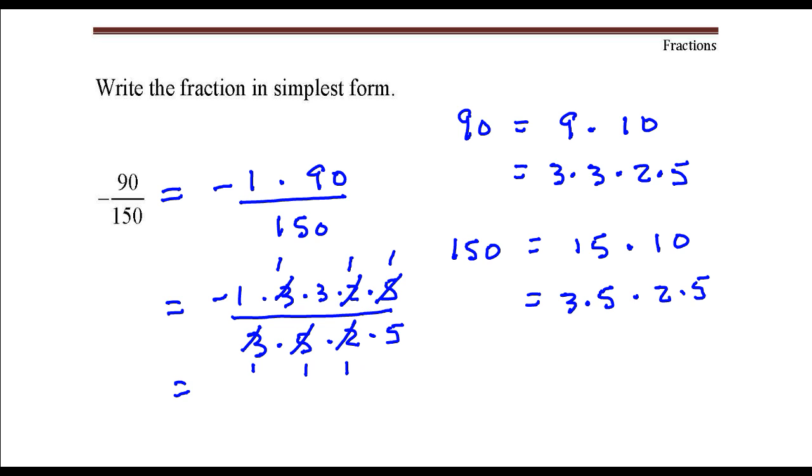The last thing I'm going to do is multiply the numbers in the numerator and multiply the numbers in the denominator. In the numerator, I have negative 1 times 1 times 3 times 1 times 1. That would be a negative 3.